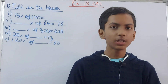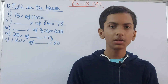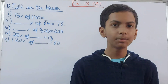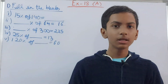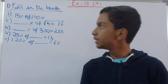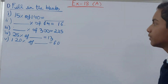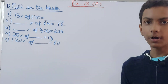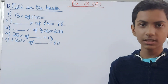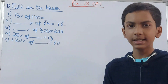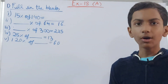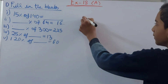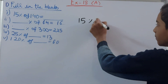Hello friends, welcome back to my YouTube channel. In this video we are going to solve ICC Mathematics Class 7, Chapter 18 Percentage, Exercise 18A, Question 1 — Fill in the Blanks. Percentage means basically out of 100. It has been derived from two words: 'per' and 'centum', meaning out of 100.